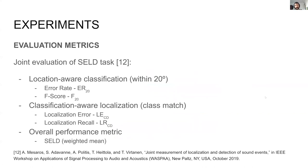To close this section, we will refer to the evaluation metrics which are proposed by the challenge organization. The main idea here is to measure the performance in a joint manner by using some recently defined metrics. More specifically, we are measuring localization and classification separately but depending on the results of the other task. Two metrics refer to the location-aware classification: error rate and F-score. They only count if localization error is below 20 degrees. Similarly, localization error and localization recall are only taken into account if the estimated class matches. The SELD metric is used as an overall metric and consists of a weighted average of all other metrics.